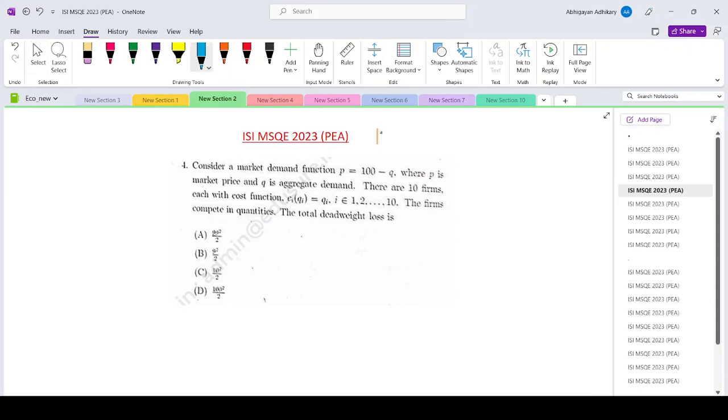Hello everyone, welcoming you to Short of Source Classes. Today we are looking at the ISI MSQE 2023 question paper, question number 4. Consider a market demand function p equals 100 minus q, where p is the market price and q is the aggregate demand. There are 10 firms, each with the cost function ci equals qi.